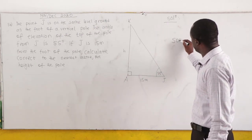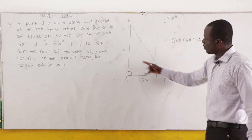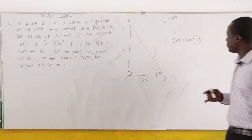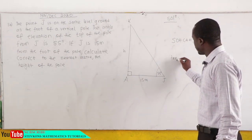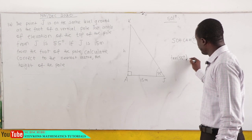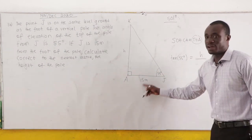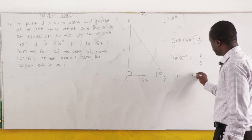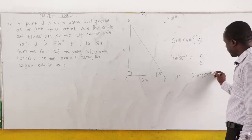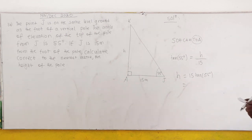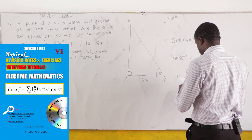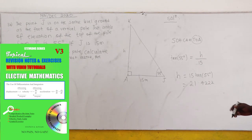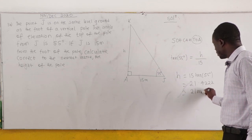Using SOH-CAH-TOA: we have the opposite (h) and the adjacent (15), so we use tan. Tan(55°) equals h over 15, so h equals 15 times tan(55°). Working this out on the calculator gives 21.4222. Correct to the nearest meter, since 4 is less than 5, the answer is 21 meters.